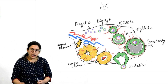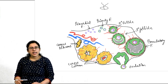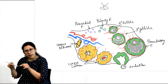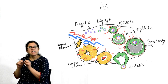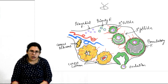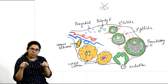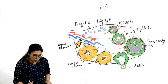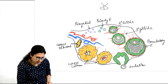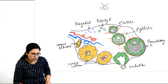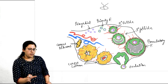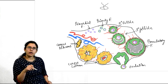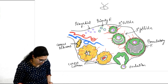These primary oocytes lying in the ovary are enveloped by a layer of cells called granulosa cells. This oocyte enveloped by a single layer of granulosa cells is called a primordial follicle. These primordial follicles will undergo various stages of development.